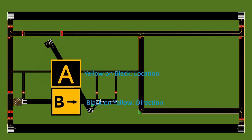Next we'll look at taxiway signs very briefly. You might find these painted on taxiways, but more likely they'll be actual signs planted in the ground next to taxiways. There are two main kinds: location signs and direction signs. Yellow text with a black background is a location sign — for example, a sign that says 'Alpha' means you are on taxiway Alpha. Every taxiway has a letter assigned to it, just like every runway has a number.